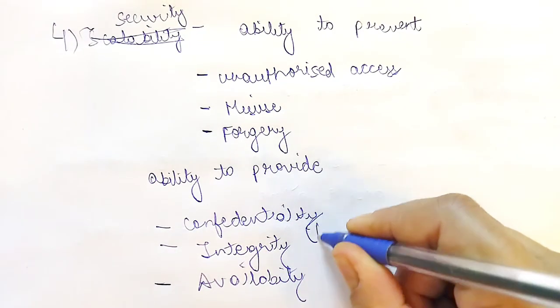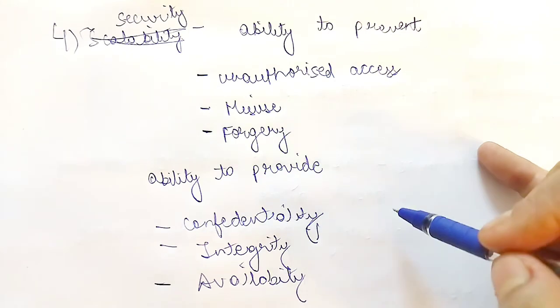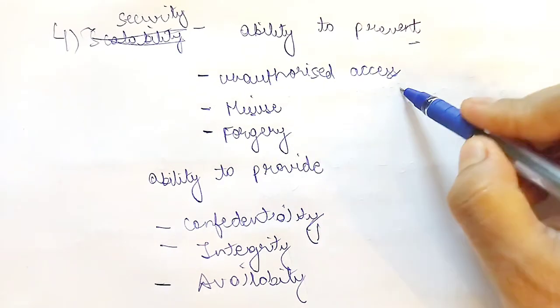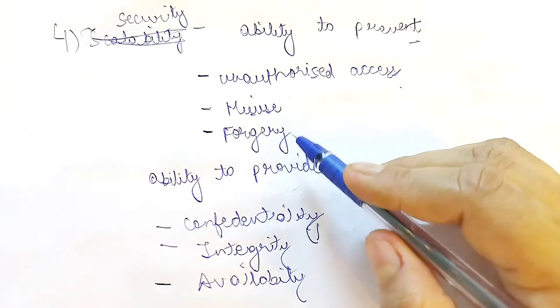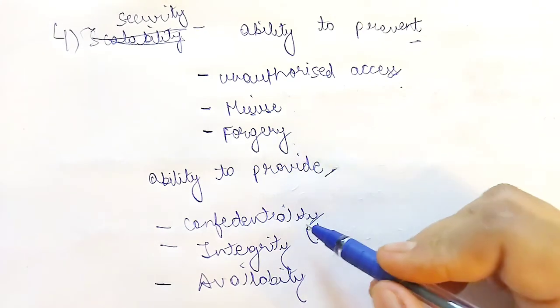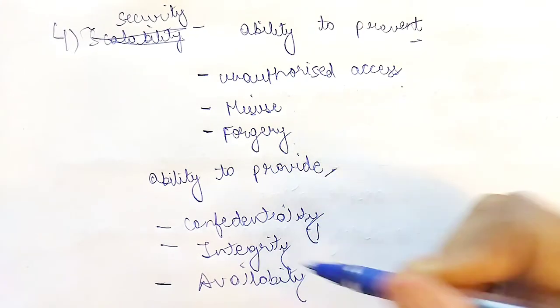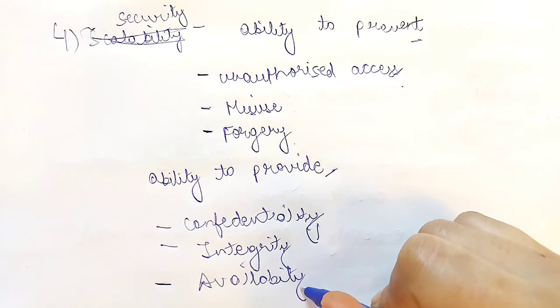Security is about two things: to prevent and to provide. What should be prevented? Unauthorized access, misuse, and forgery. And what should be provided? Confidentiality, integrity, and availability.